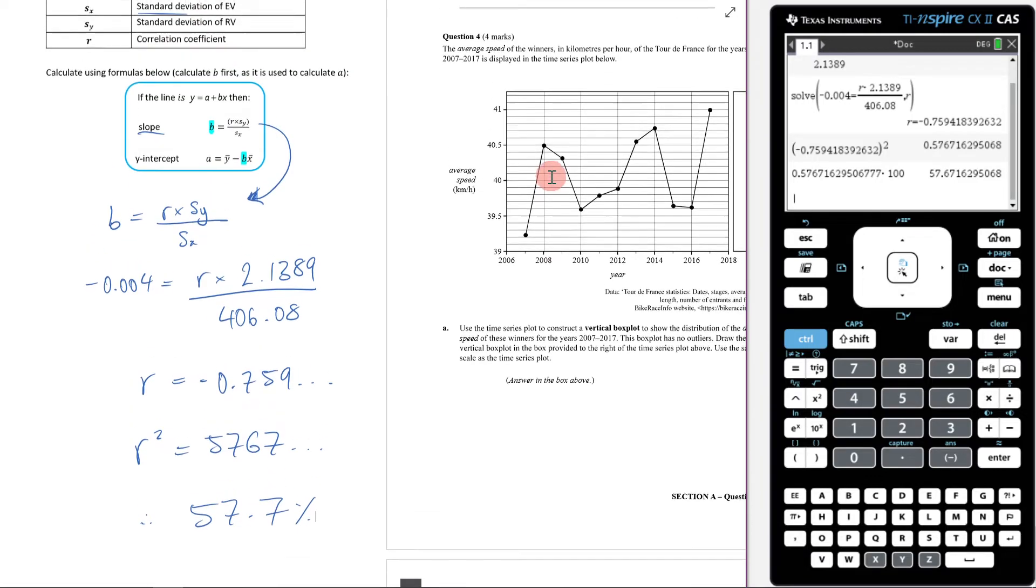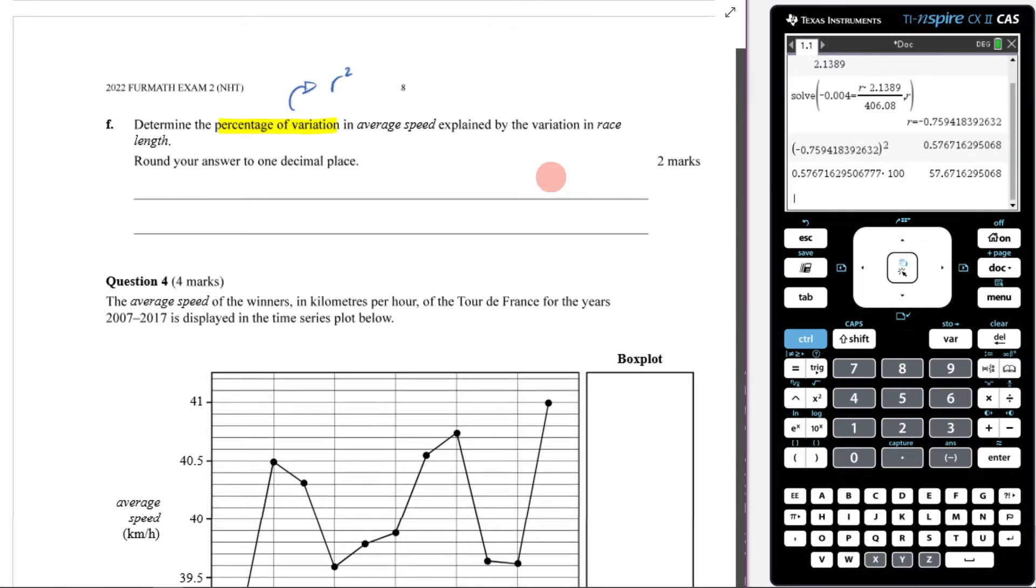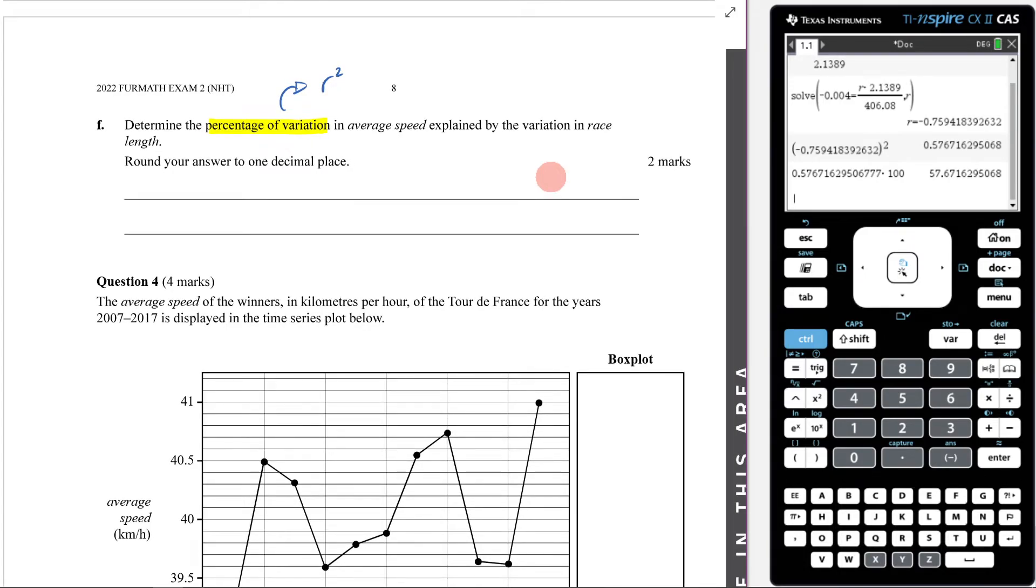That's how you approach that question. That's the answer. Now in terms of what we would need to write down to get our two marks here, remember that if you do give your final answer as the correct answer, you will get the total two marks. But it's always good to think, if I did mess it up, how would I only get one mark here?